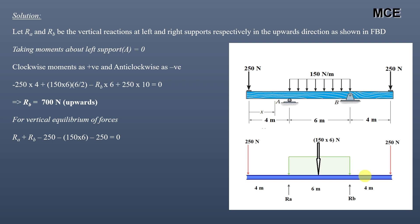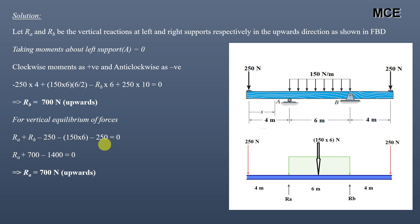We get RA plus RB minus 250 minus 150 into 6 minus 250 equal to zero. From this, we get RA equal to 700 newtons, which is positive so it acts in the upward direction as assumed in the free body diagram. After finding the reactions, we can now find the shear and the moment functions for this beam.